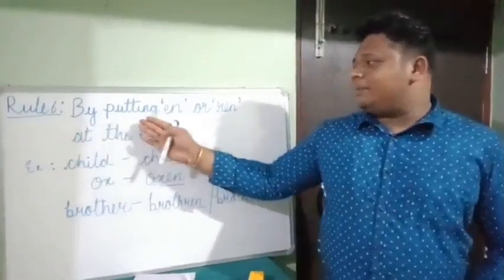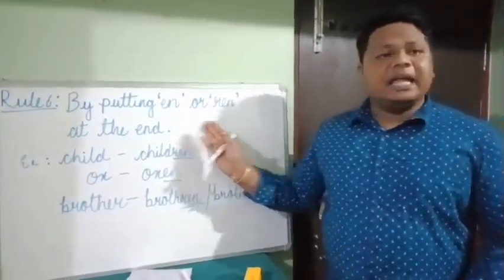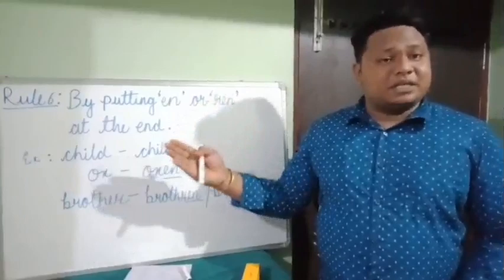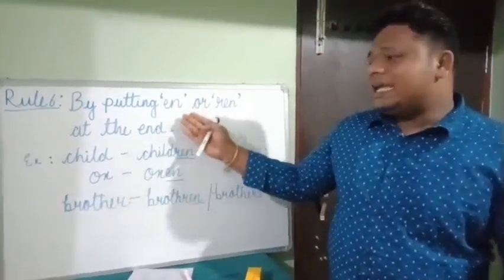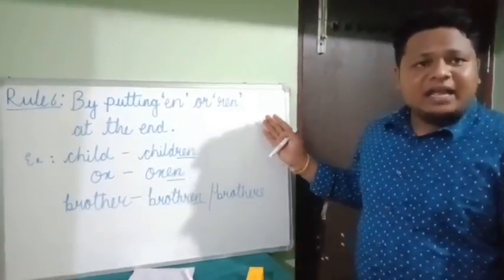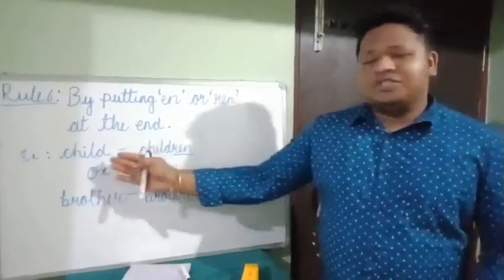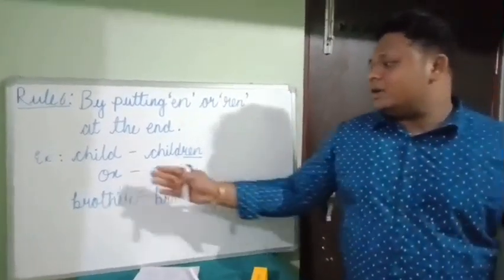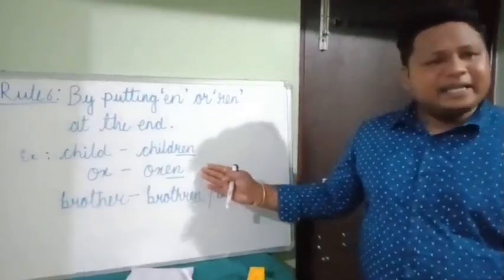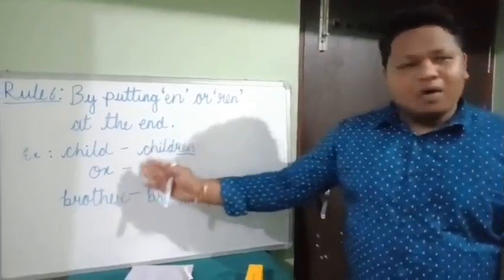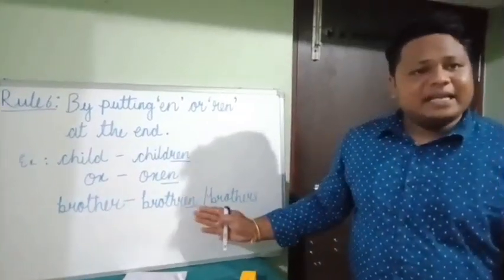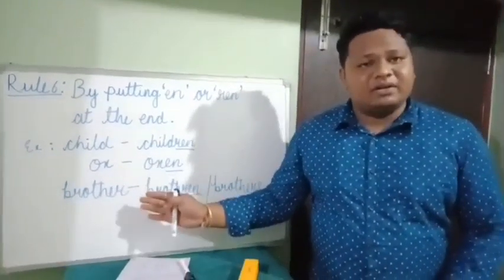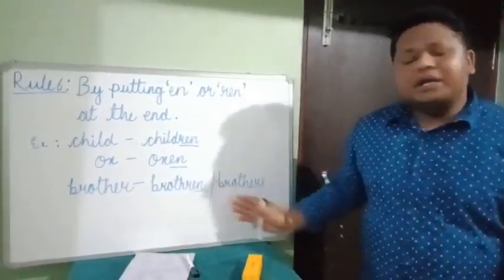Rule number six: by putting EN or REN at the end, we make the plural form. For example, child — we add REN: children. Ox — we add EN: oxen. Brother — we add EN: brethren. The plural form of brother is also brothers, so you can use either one.